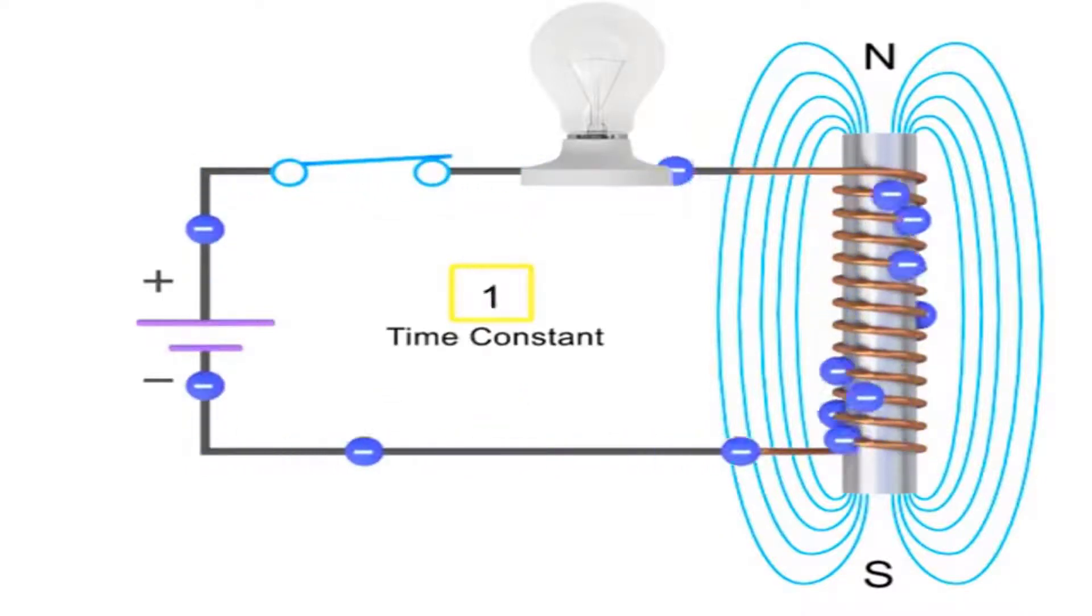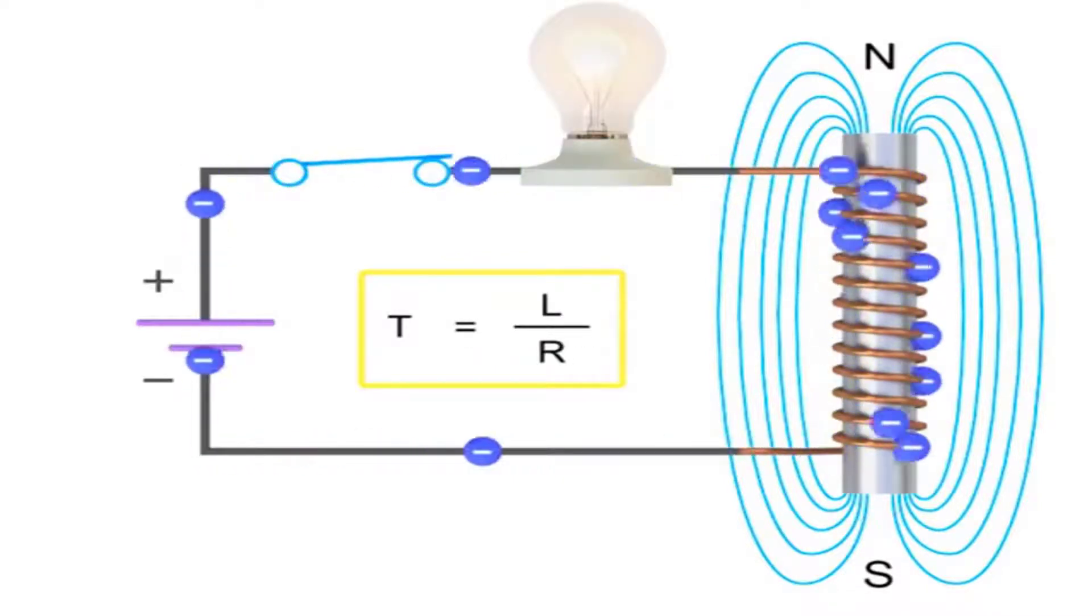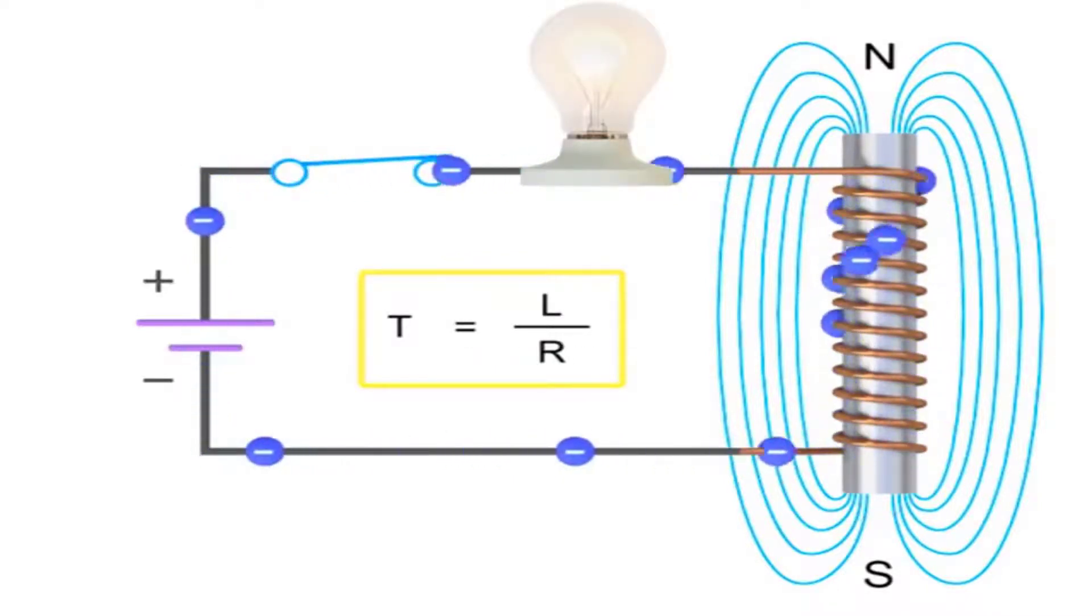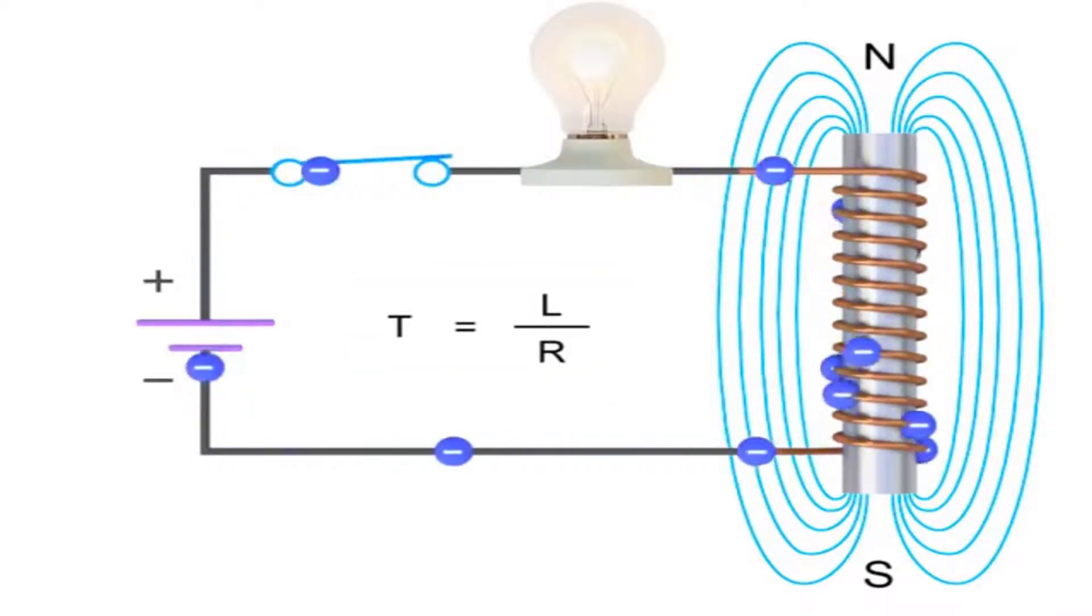The current will continue to flow and reach its maximum value after 5 time constants, or 5T, where T is equal to L divided by R. The light bulb will then be at its maximum brightness.